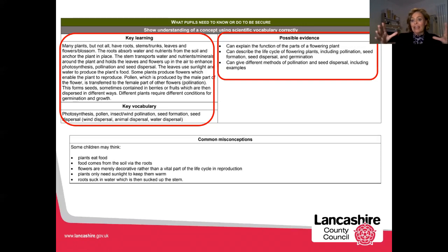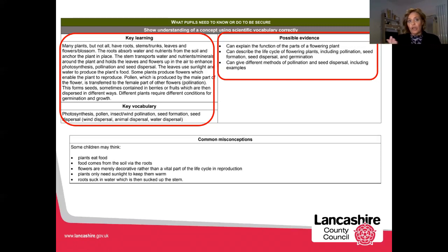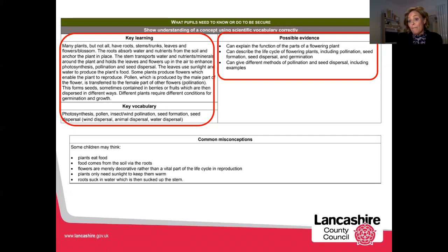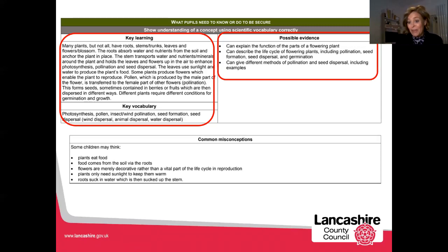I might take a photograph of the sorting activity and put it in the children's books. But the real evidence that they've learned something is: could that child tell me something about birds — that they have a beak, feathers, two legs, and wings? They might even mention exceptions like penguins, which have wings but use them for swimming rather than flying. That's what I want at the end of the lesson — not that they can cut and stick pictures in the right places. That's the doing. The learning is: can they talk about those features?